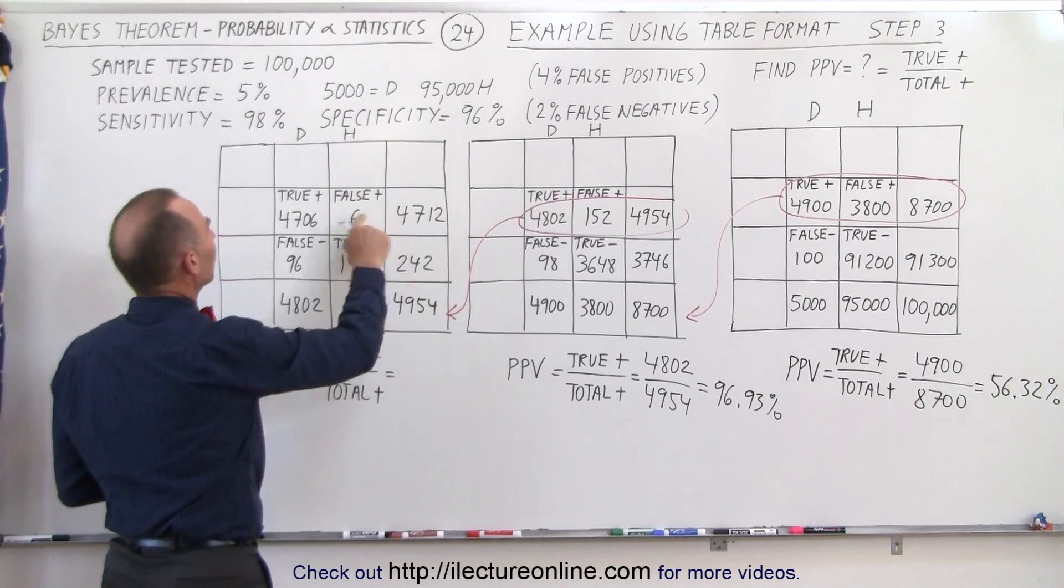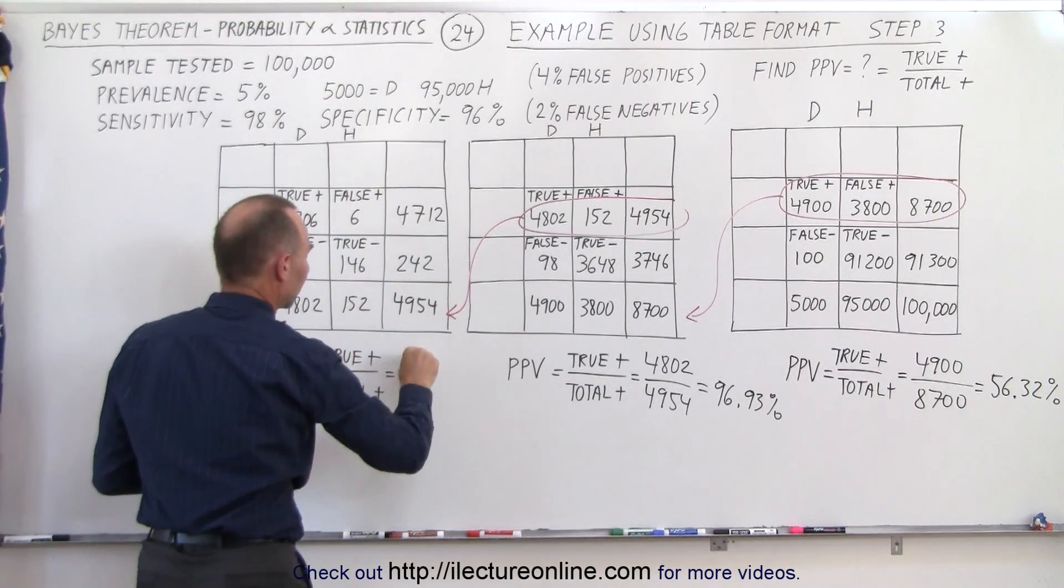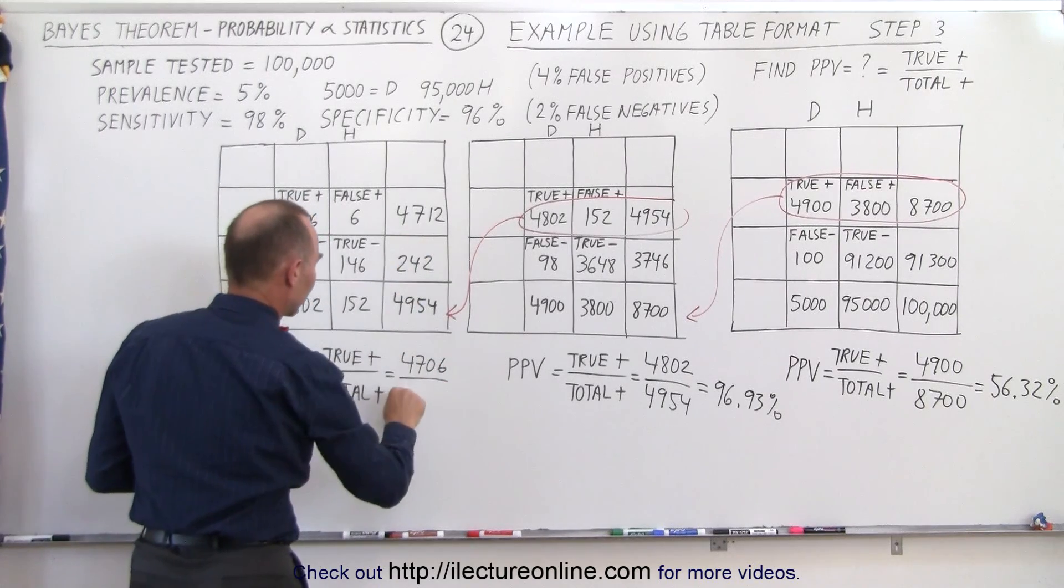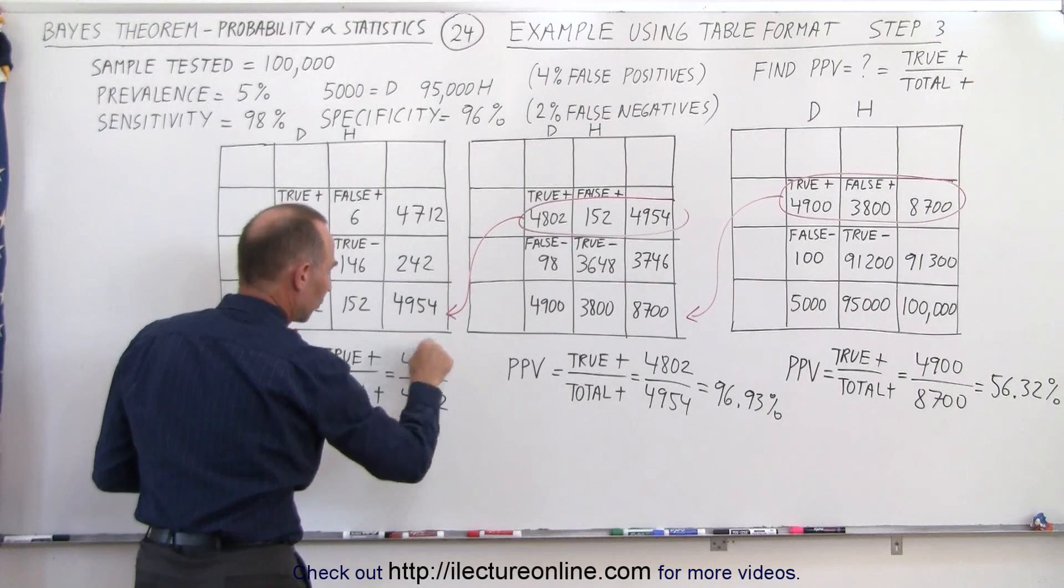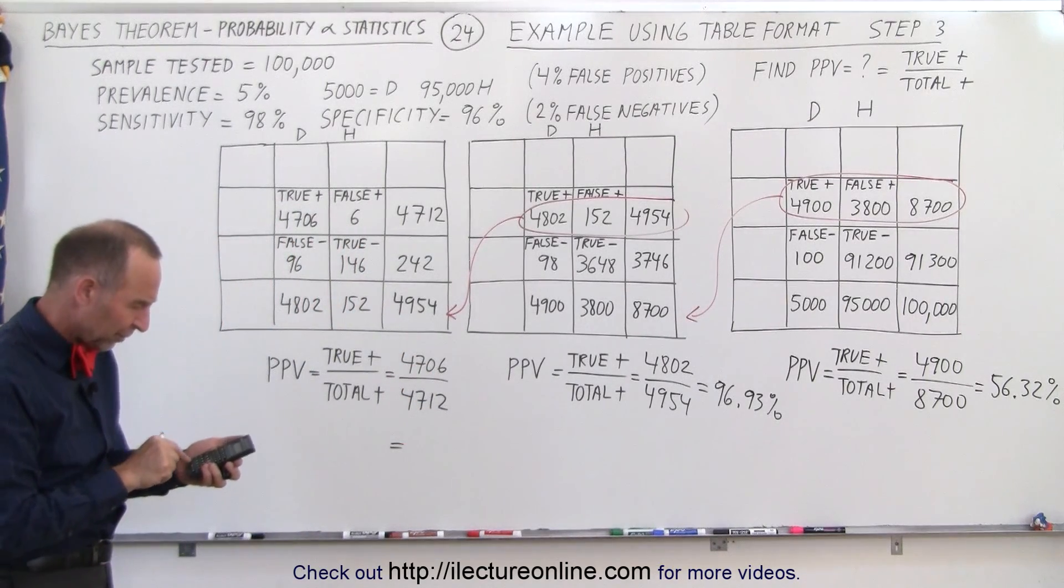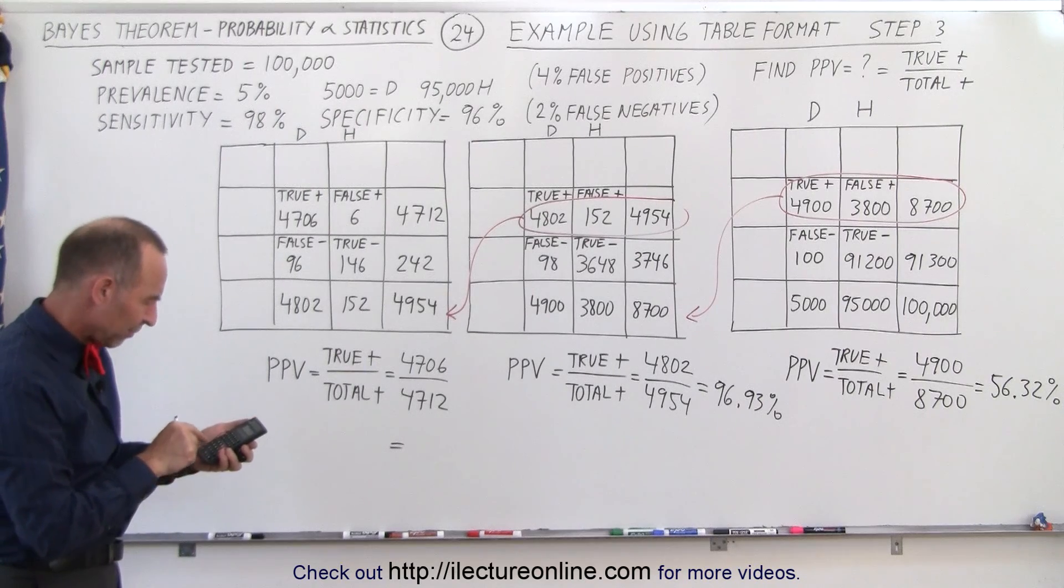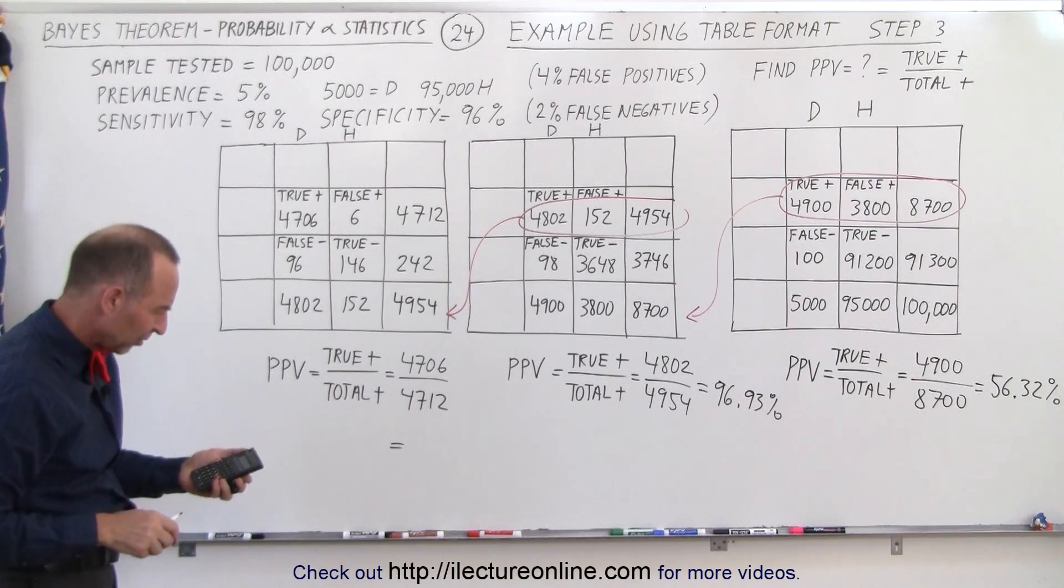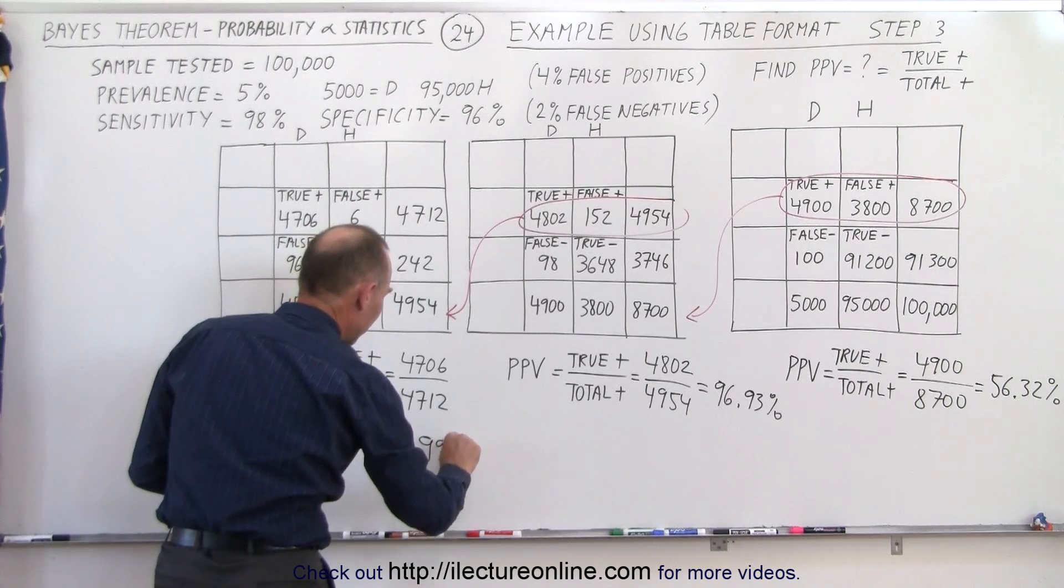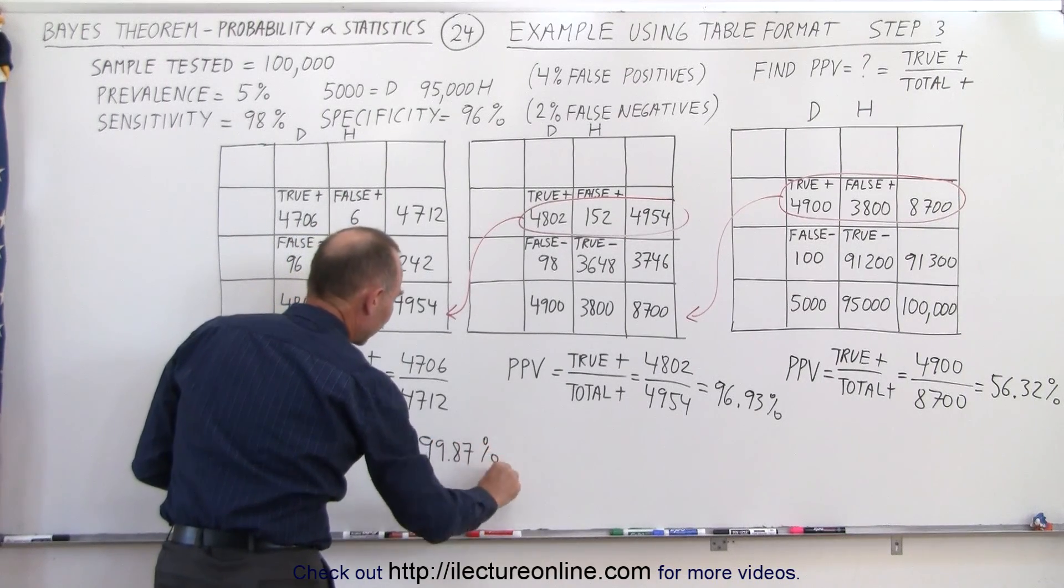The true positive number in this case is 4,706. The total positives is 4,712. You can see that that ratio is very close to 1. So we have 4,706 divided by 4,712 which is 99.87%. 99.87%. That's pretty good.